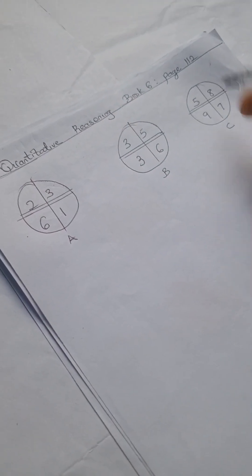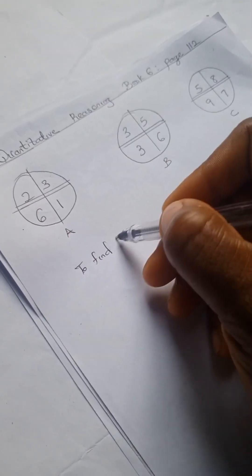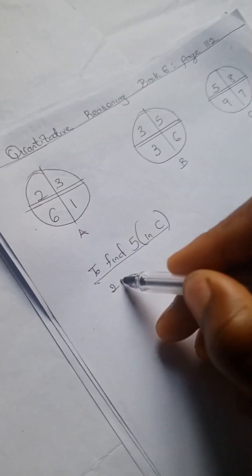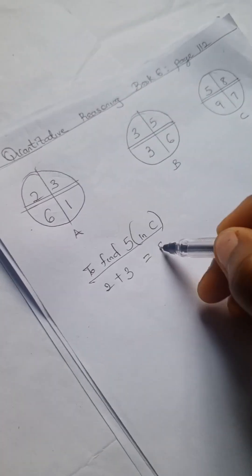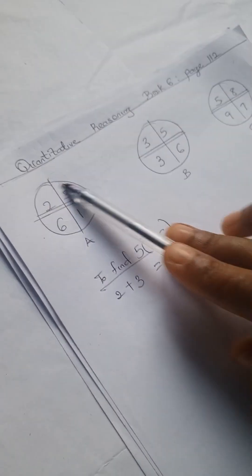So let's try to find numbers in shape C. To find 5 in C, what we do is 2 plus 3 here, right? That gives us 5 here. So to get C, you're going to add A plus B. That will give you C.